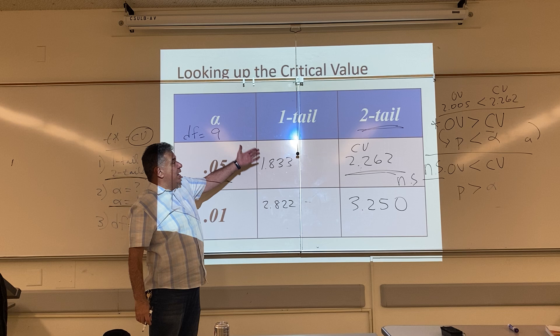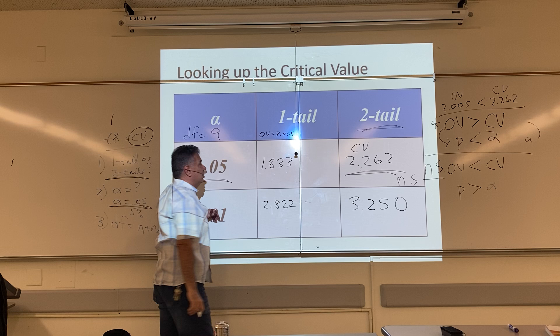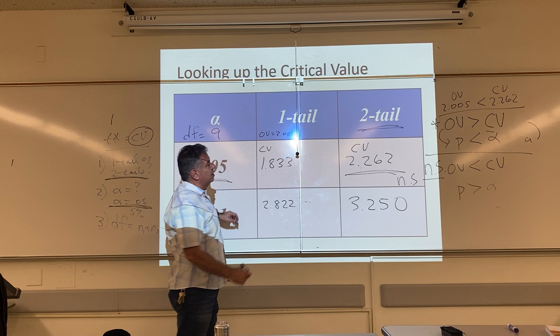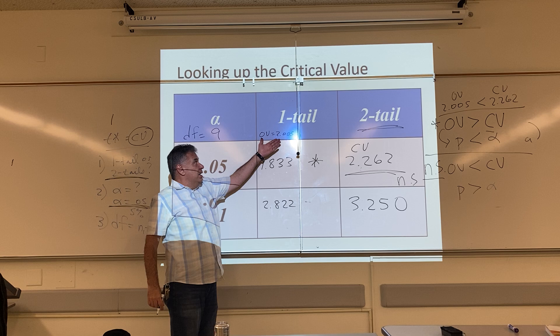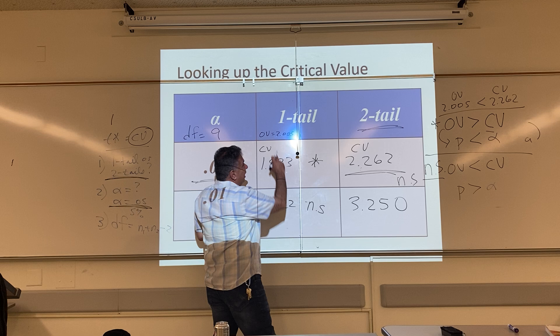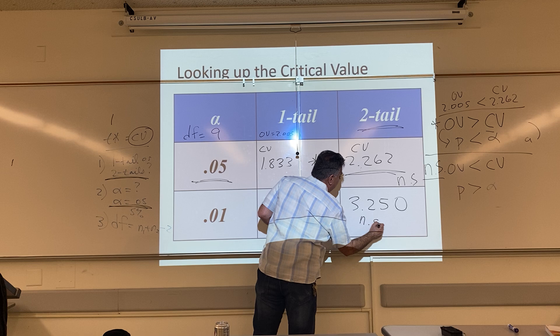If the observed value is 2.005 and the CV is 1.833, my answer is bigger, so it would have been significant. If the CV is 2.822, my answer would have been non-significant. And if the CV is 3.250, my answer would also have been non-significant.